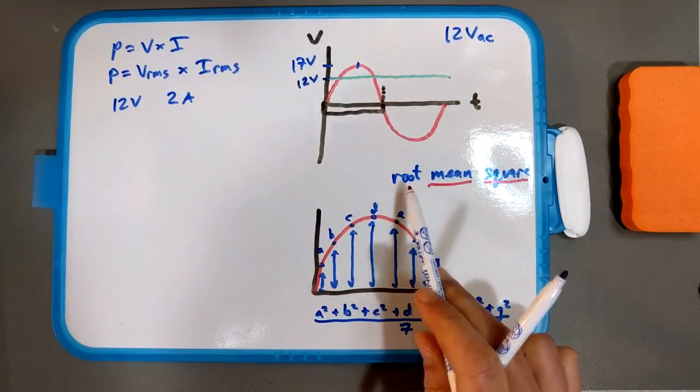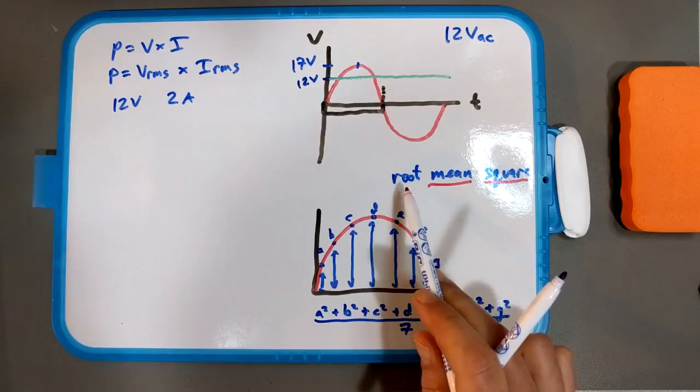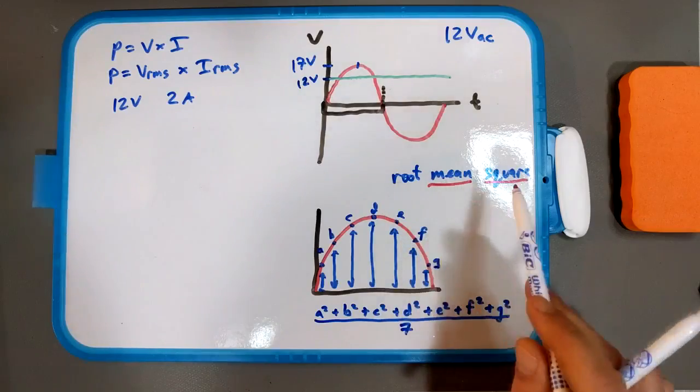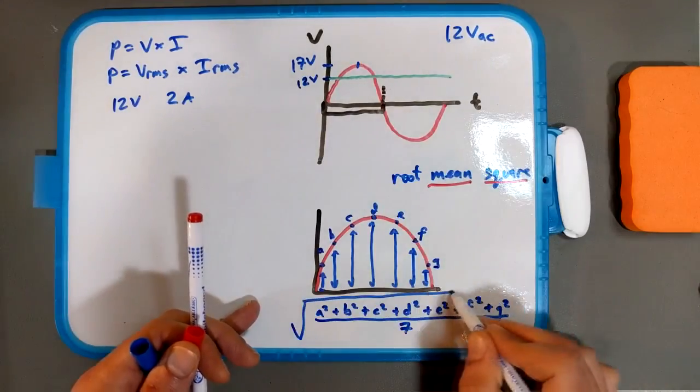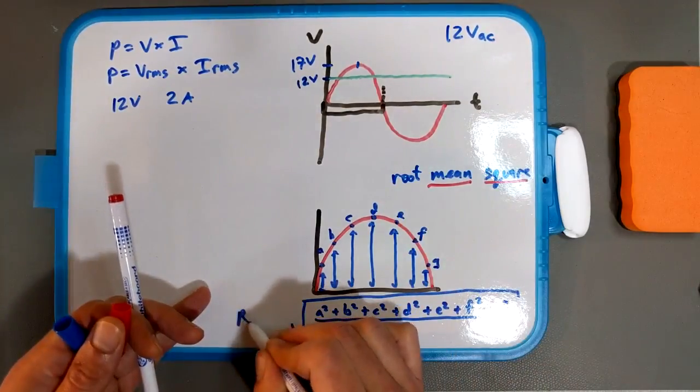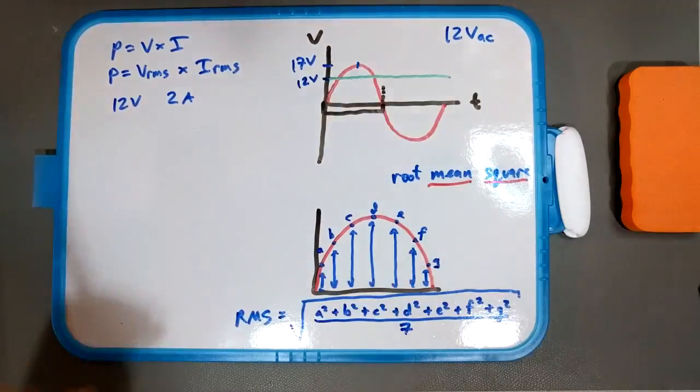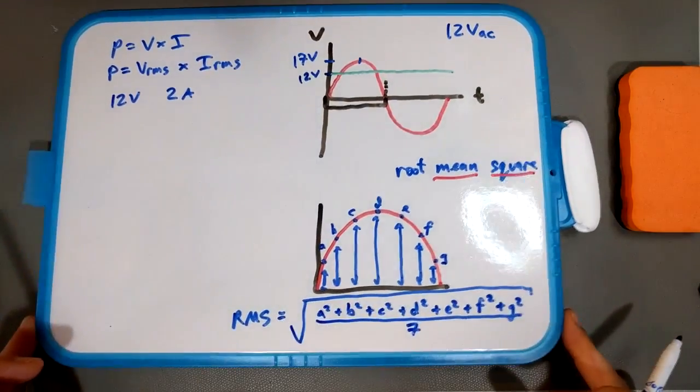but now you need the root, which is the square root of the average of the squared values. So all you do is you take the square root of that whole thing, and that is RMS. Ta-da!